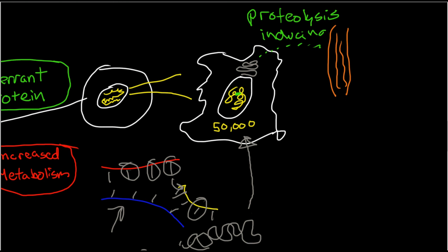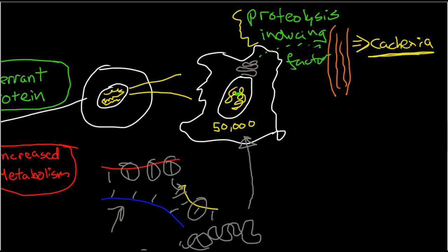Our cells are breaking down many, many proteins. Proteolysis inducing factor is one of the factors that causes cancer cachexia — the significant weight loss and muscle wasting that we see with cancer. It is produced from cancerous cells because of mutations in the genetics that allow for the production of this aberrant protein.